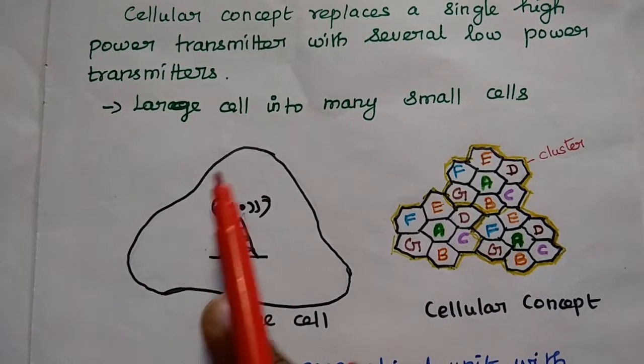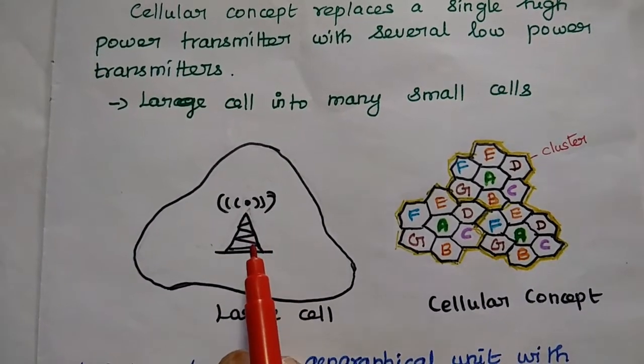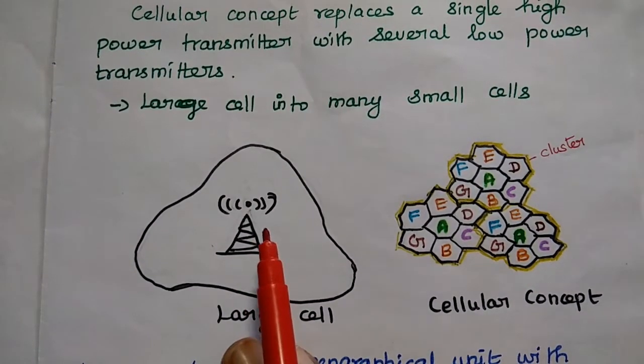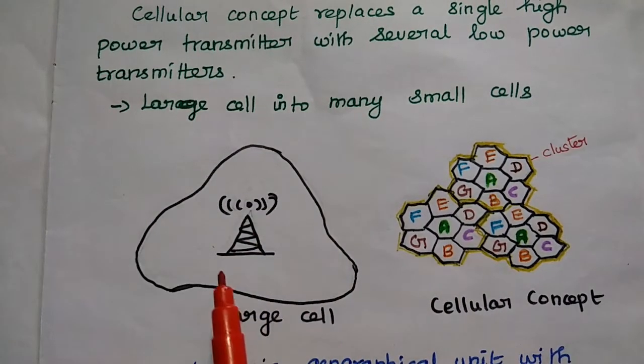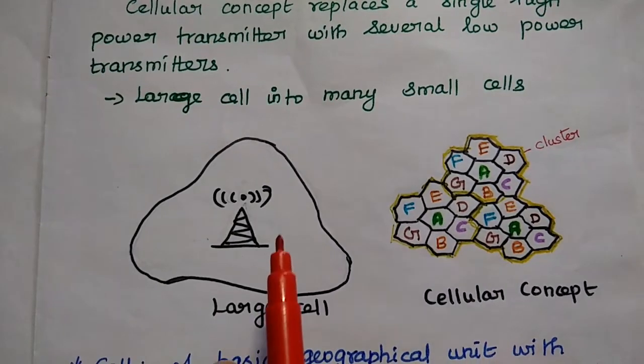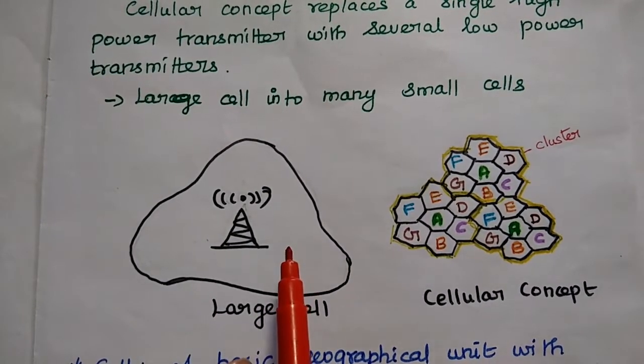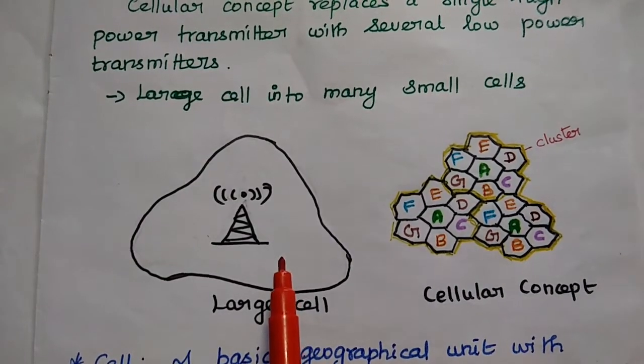We can consider a large geographical area with a single high power transmitter. Whenever we are going to allocate the channels through this transmitter for all the users within the area, then the spectral efficiency is getting reduced as well as the user capacity is also getting affected.